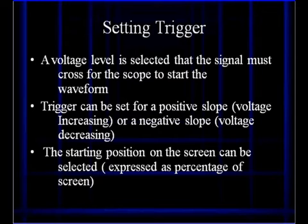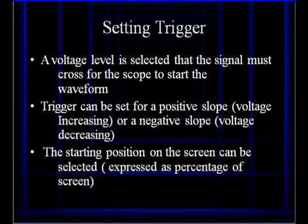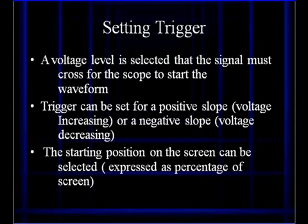Let's start off by defining all these terms. A trigger point is defined as a voltage point that the signal must cross for the scope to begin writing the waveform on the screen. The trigger can be set for either a positive slope when voltage is increasing, or a negative slope when voltage is decreasing. Sometimes this is called rising or falling slope — either way, it's the same thing.